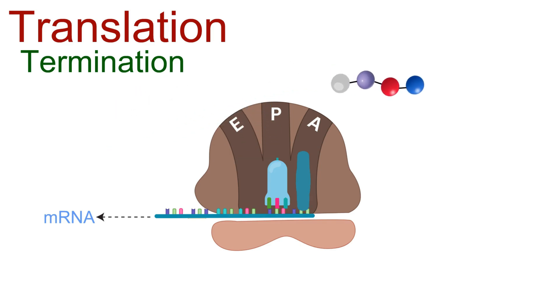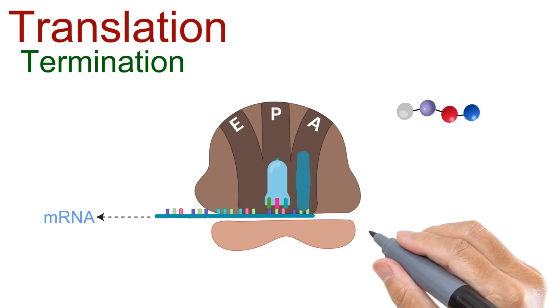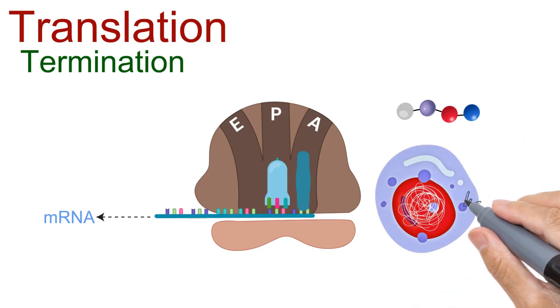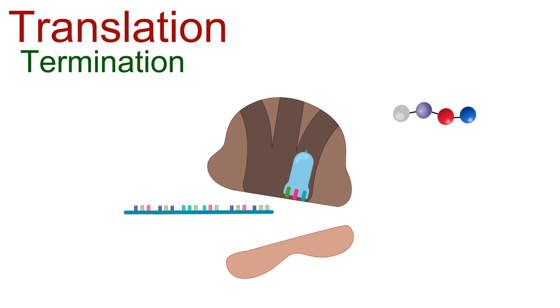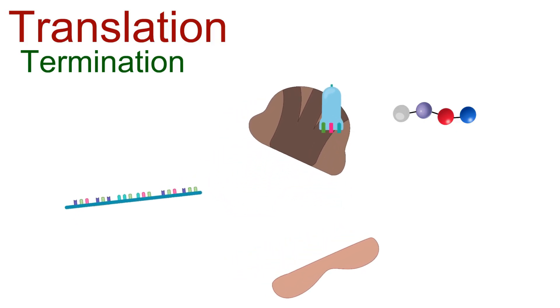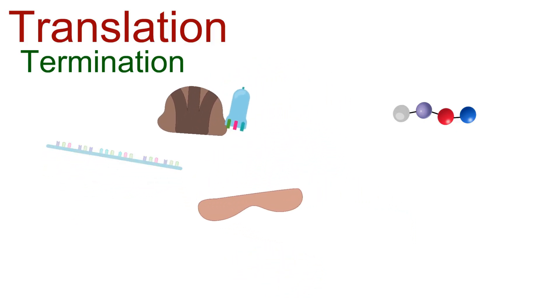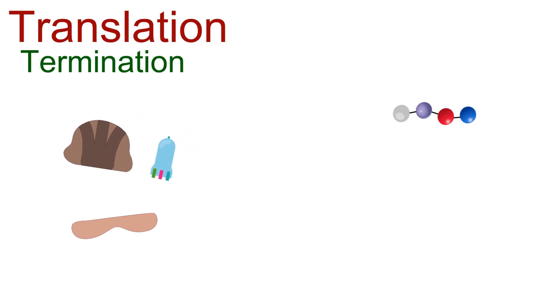The newly made polypeptide chain is released into the cytoplasm, ready to fold into its unique 3D structure. The ribosomal subunits, tRNA, and mRNA then separate and can be recycled for another round of translation.